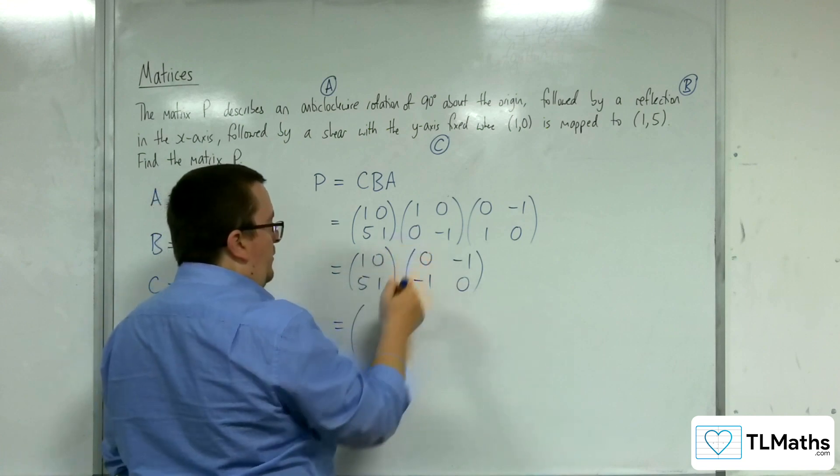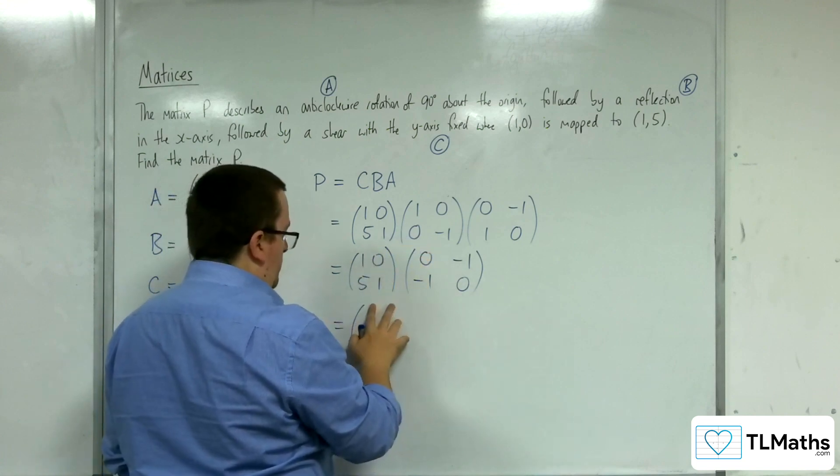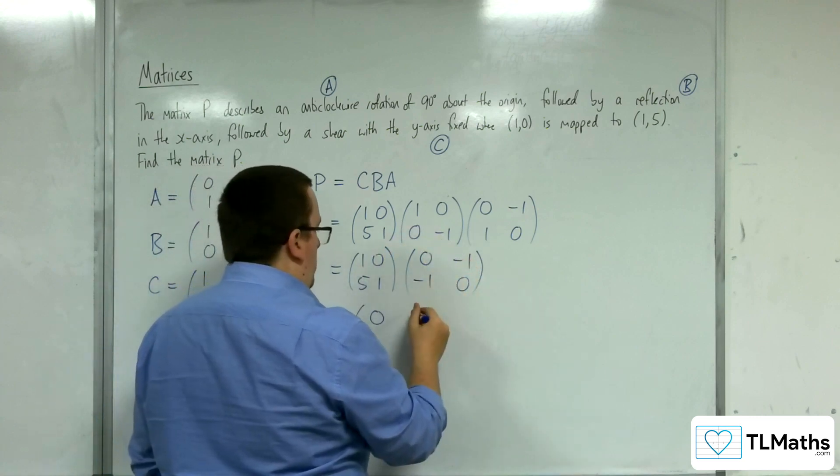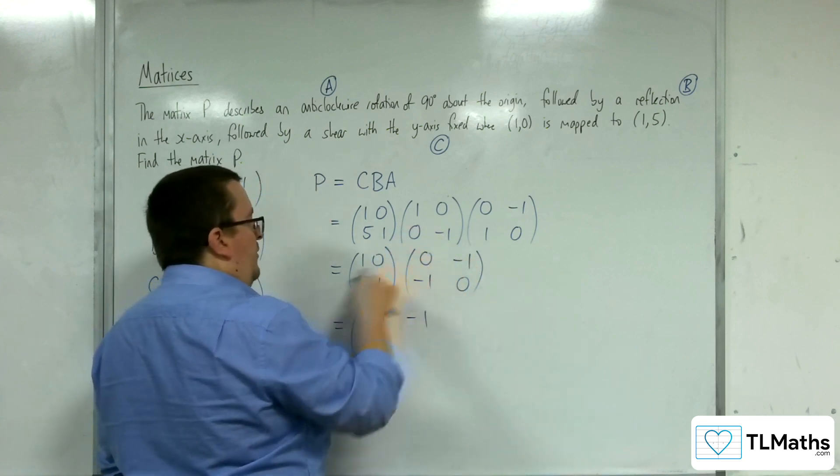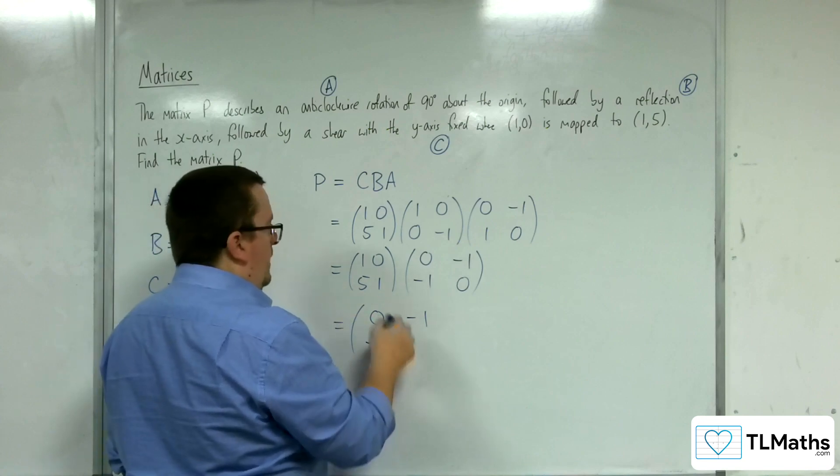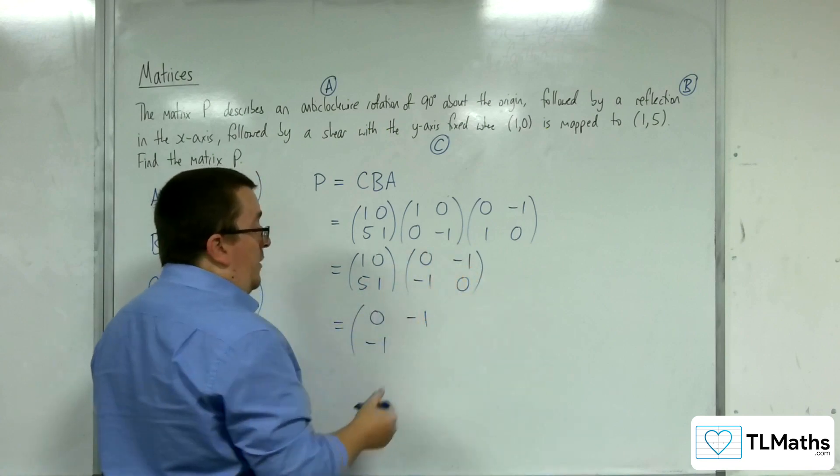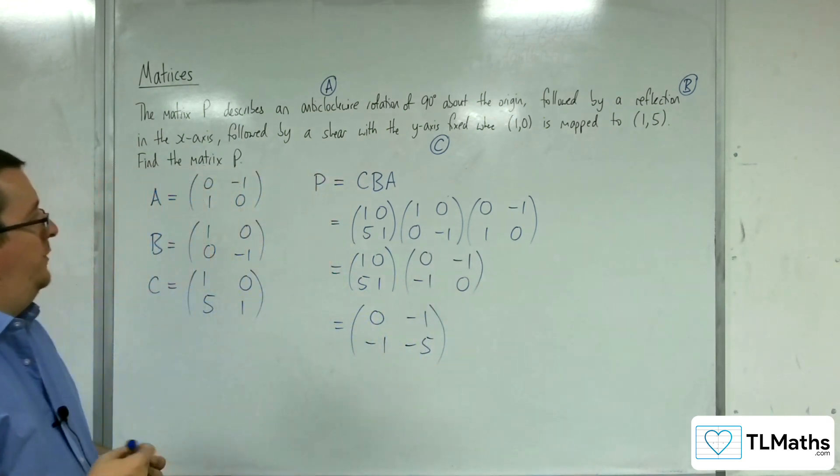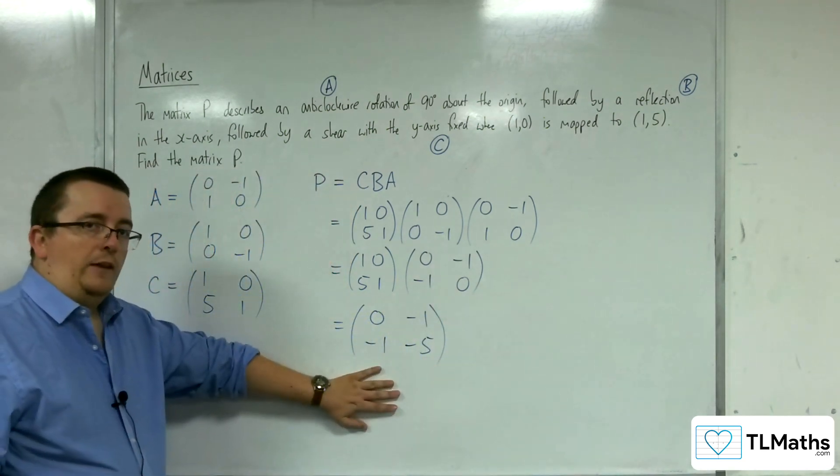Now multiplying 1-0-5-1 with the result. 1-0 multiplied by 0 negative 1 is 0 negative 1. 5-1 multiplied by 0-1 is negative 1, and 5-1 multiplied by minus 1-0 is negative 5. And so this is the matrix P as required.